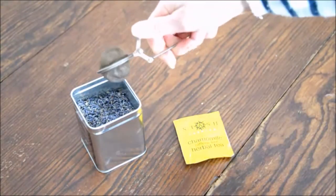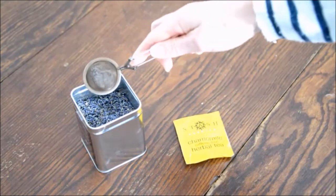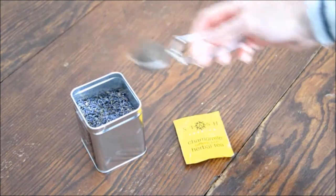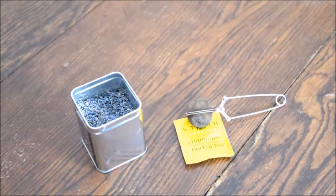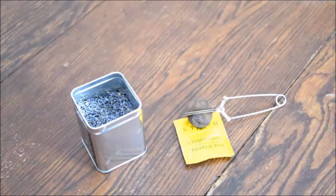You can use a tea ball like this to steep your tea. Add them both together to an eight-ounce cup of really hot, almost boiling water and allow it to steep for three to five minutes.